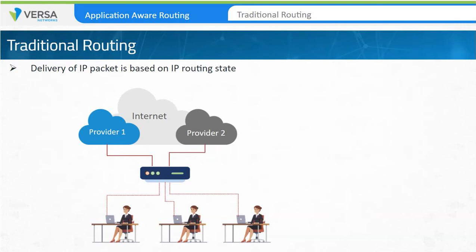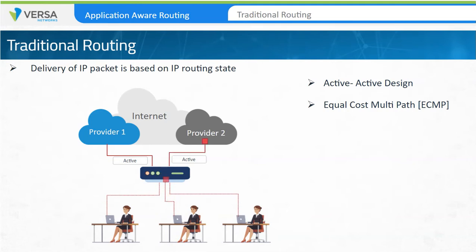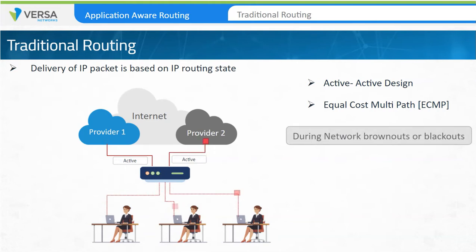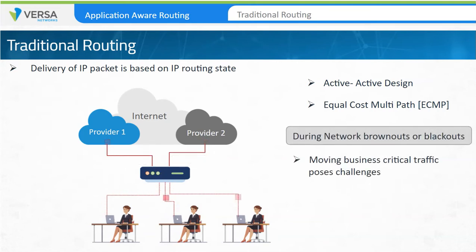The other design choice is to use both links by leveraging equal-cost multipath, or ECMP routing. This is called an active-active environment, and traffic from branches can be load-balanced across all available links. In either case, when a circuit experiences poor performance or events such as brownouts occur, moving business-critical traffic to an alternate WAN poses significant challenges to administrators.